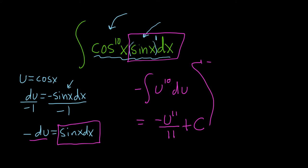And we're almost done. The last thing to do is replace u with cosine. So this is negative 1/11th cosine of x to the 11th power plus our constant of integration, capital C.